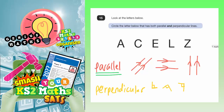Perpendicular is just a posh word for lines which are at right angles to each other. So if you can see a right angle in the letter then it's going to contain perpendicular lines.